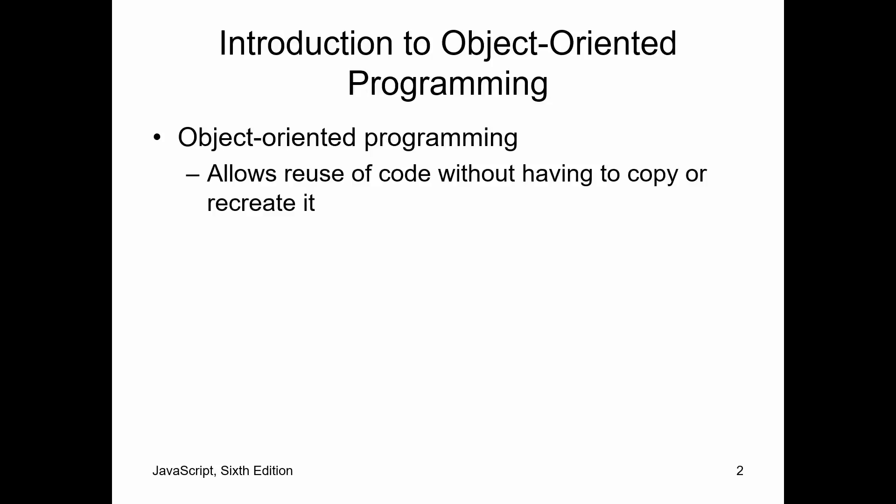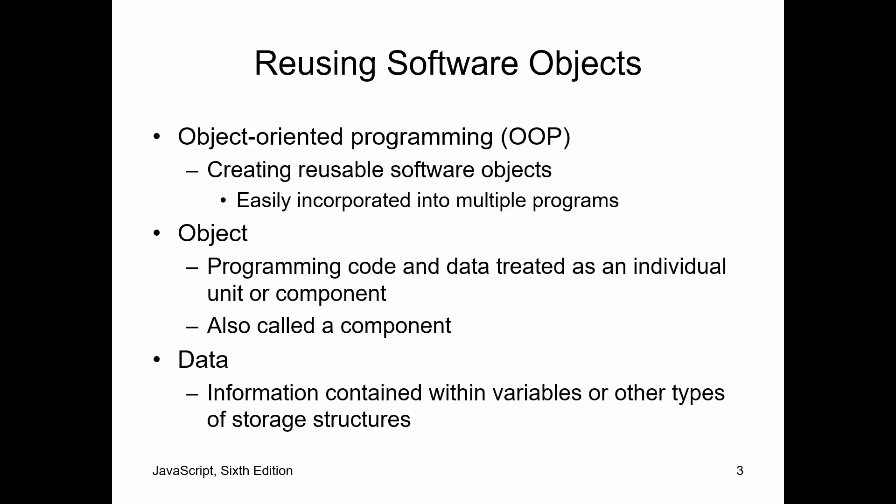Object-oriented programming is what's known as a paradigm shift. That means it's a shift in a way of thinking. One of the things that makes it so tempting for managers is it allows code reuse. Any time they see reuse, they think saving money. Object-oriented programming is about creating reusable software objects.